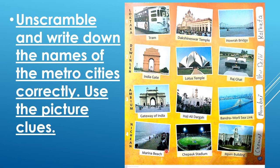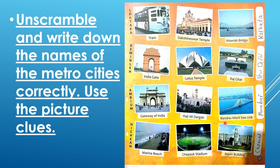Scramble and write down the names of the metro cities correctly using the picture clues. Here kids, you are given pictures of famous places, and the city name is given in jumbled words. You have to unscramble the jumbled words and write the correct spelling in the box. So: Tram, Dakshineshwar Mandir, and Howrah Bridge — where are these famous? Kolkata! So you have to write here Kolkata.